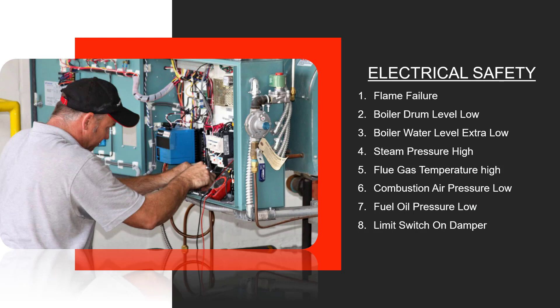What are the electrical safeties? One: flame failure. Two: boiler drum level low. Three: boiler water level extra low. Four: steam pressure high. Five: flue gas temperature high. Six: combustion air pressure low. Seven: fuel oil pressure low. Eight: limit switch on damper.